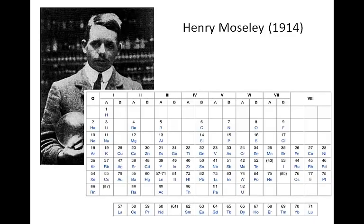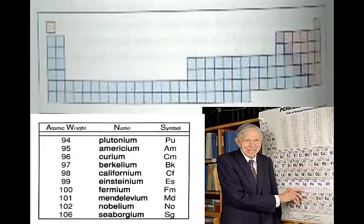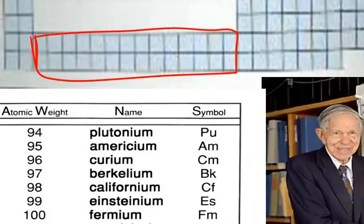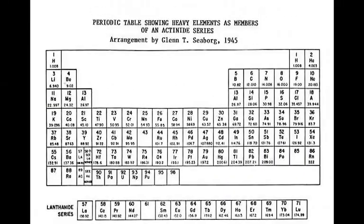Henry Moseley, in 1914, arranged elements according to their increasing atomic number. Some of the problems in Mendeleev's table disappeared when we moved to increasing atomic number. As new elements were beginning to be discovered, the periodic table was taking on an interesting shape. This continued until Glenn Seaborg, who himself discovered several new elements, rearranged the periodic table by taking two groups out of the main body of the table and starting a new series of elements below.